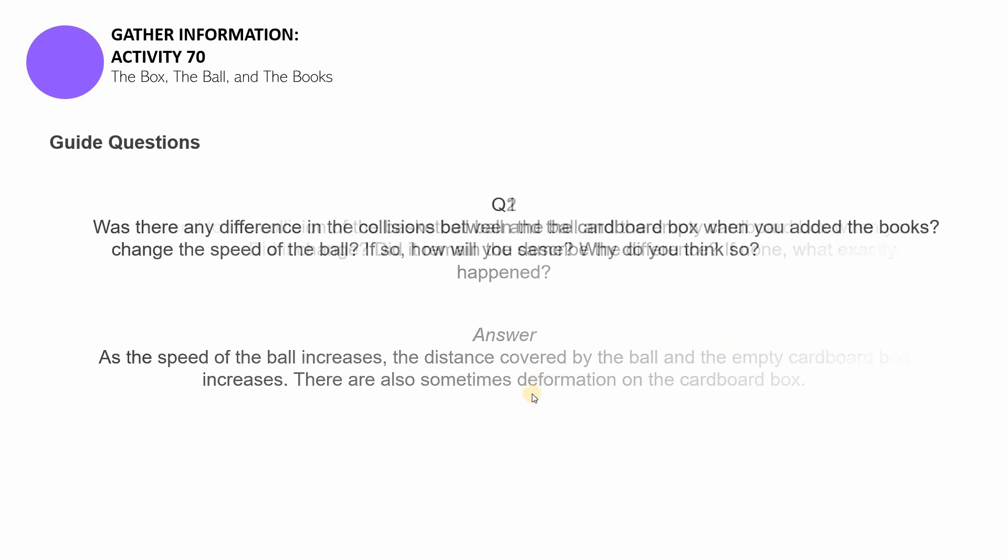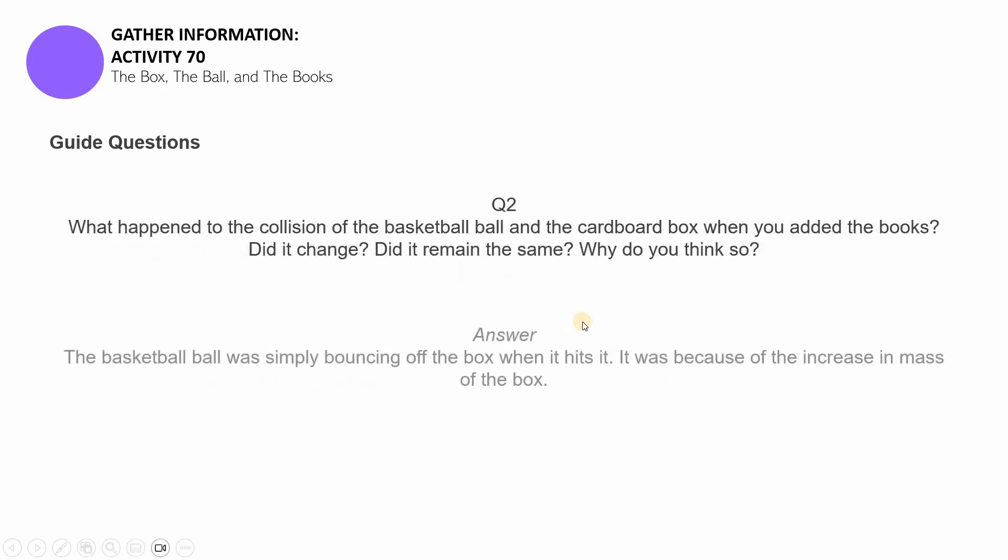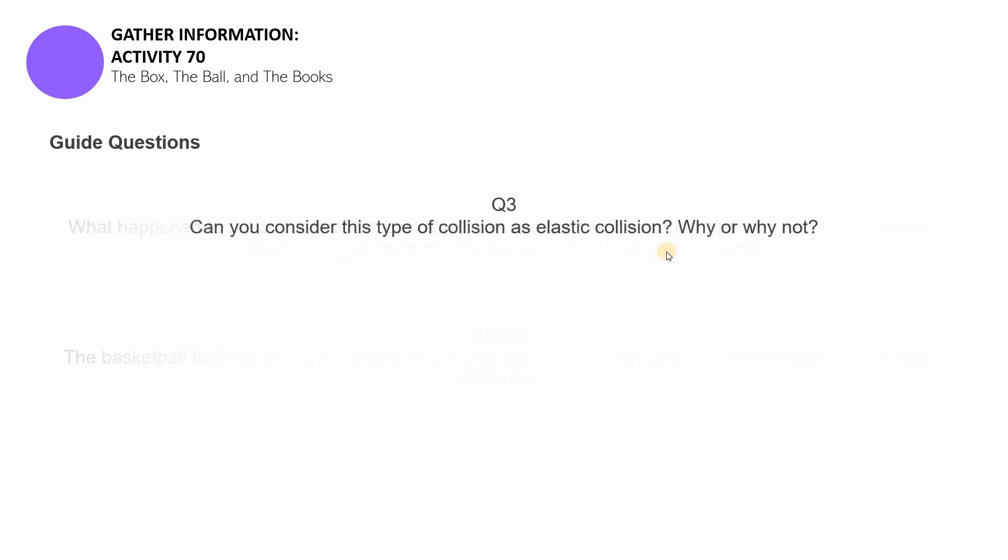Okay, question number two. What happened to the, what did you observe? Did something change? All right, the answer to this question was yung nga, the basketball ball was simply bouncing off the box when it hits because it's already heavier. It was because there were books already inside the box.